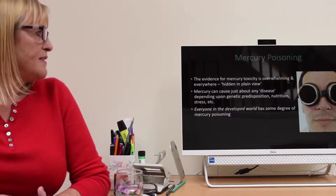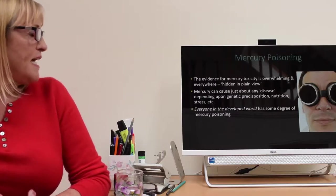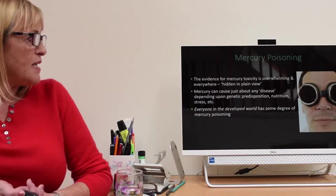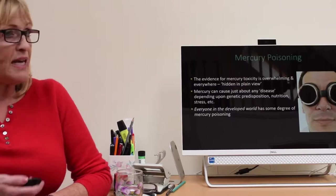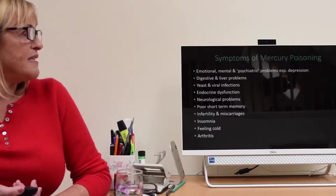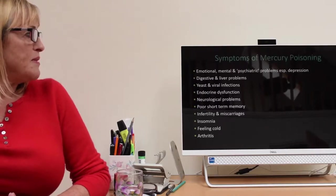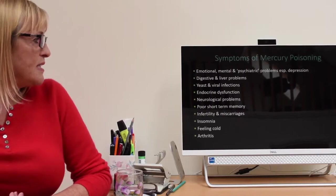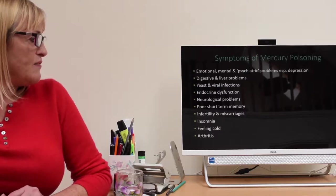In my opinion the evidence for mercury poisoning is everywhere and it's overwhelming. It's hidden in plain view, it's just nobody's looking for it. It can cause just about any disease depending upon the genetic predisposition of the person, their nutrition, stress and so forth. Everyone in the developed world has some degree of mercury poisoning. One of the sources of mercury is also volcanoes and things like that. So it does occur naturally. There are emotional, mental and psychiatric problems with mercury poisoning, especially depression. Digestive and liver problems. Yeast and viral infections. Endocrine dysfunction because the endocrine glands get destroyed. Neurological problems. Poor short term memory. Infertility and miscarriages. Insomnia. Feeling cold. And arthritis.